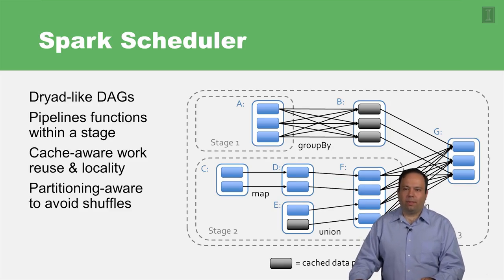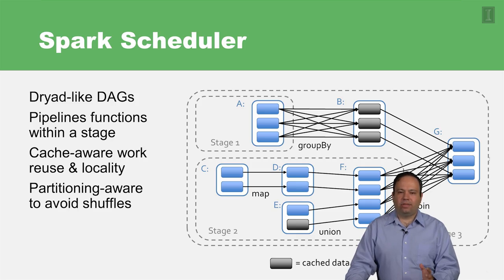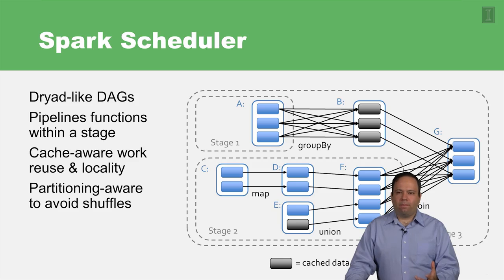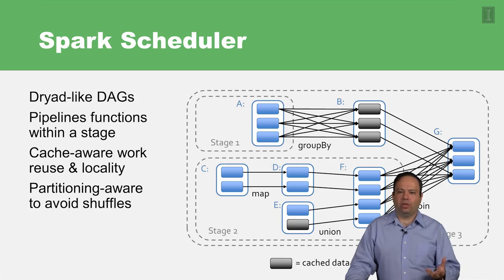Another thing I want to talk about is the Spark scheduler. What it deals with is directed acyclic graphs — DAGs — kind of similar to what another framework from Microsoft, Dryad, used to introduce. What really happens in Spark is that it takes your RDDs, transformations, and the rest of these things, creates graphs of data flows out of your algorithm, and then passes that graph to a scheduler module.